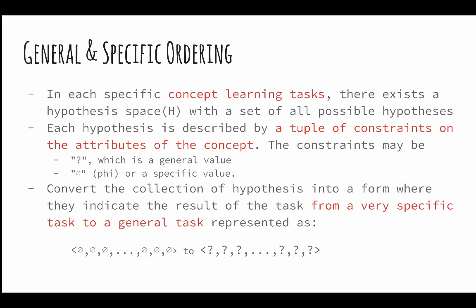Now, let's talk about general and specific ordering. Every concept learning task consists of a hypothesis space denoted by capital H and a list of hypotheses H1, H2, and so on. A general value, question mark, is a placeholder which could accept any of the given possible values for the particular hypothesis, whereas the phi operator denotes that no value of the attribute can be accepted. A very specific hypothesis can be imagined as a set of strict conditions to be checked, where the most specific ordering is denoted by a set of phi's, indicating that no value in the hypothesis can satisfy the given concept learning criterion.